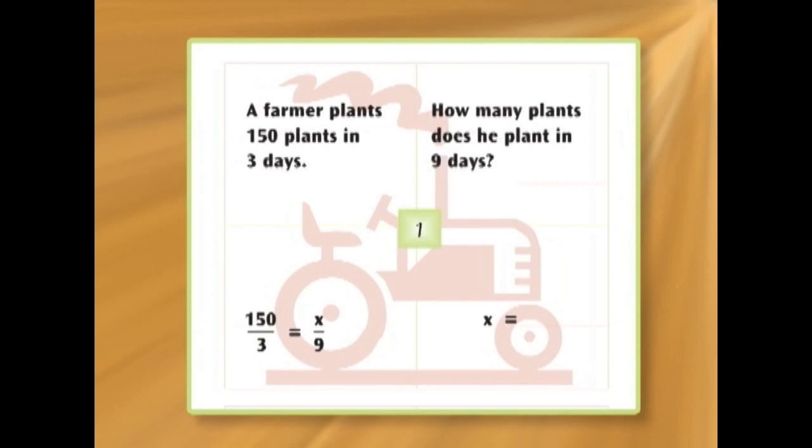A farmer plants 150 plants in 3 days. How many does he plant in 9 days? We can write this problem like this. He plants 150 plants in 3 days. So we write 150 over 3 is the same as... well, we don't know the answer, do we? Because we've not worked it out yet. So, let's call it x. Is the same as x divided by 9.